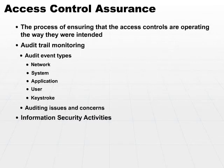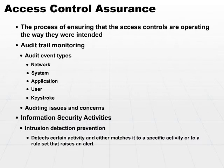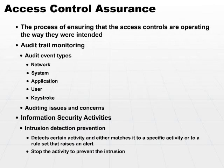Aside from just monitoring, there are other activities which allow us to ensure that our access controls are operating as they should be. Intrusion detection or prevention systems are automated systems which may operate on a server or on a network appliance that detects certain activity and either matches it to a specific known type of activity or to a rule set that decides something doesn't look quite right and raises an alert — it can actually detect an intrusion as it's occurring. An intrusion prevention system goes one step further: once an intrusion has been detected, not only will it raise an alert, but it will also stop the activity and prevent the intrusion as it's occurring.